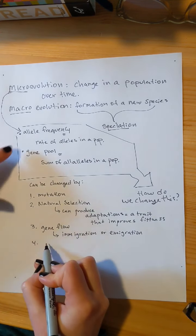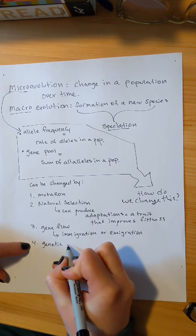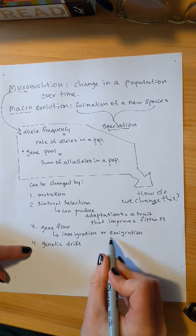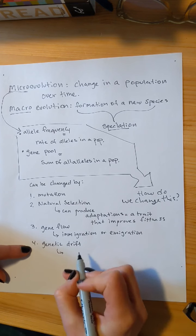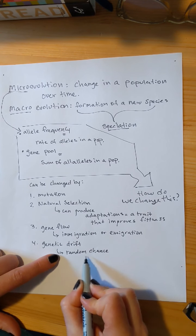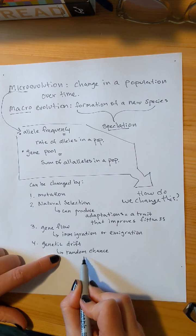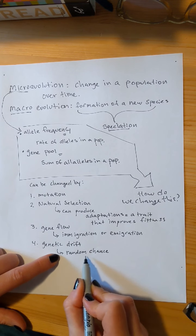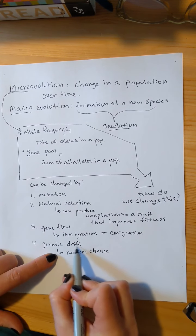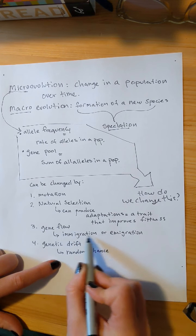Then the last thing that we can do to change our allele frequency in a population leading to microevolution is genetic drift. So gene flow is immigration and emigration bringing new genes in or taking genes out of your population. Genetic drift is random. So this is something like a wildfire kills half of the trees in your garden, or a squirrel tries to cross the road and gets hit by a car. It's not intentional, and it's based just on sheer chance. So genetic drift is some of your population will not be able to reproduce based on random chance. And flow, you're flowing from one place to another. That helps me remember it.